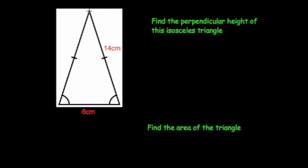We go to the top and cut it in half. By doing so, we now have a right angle here, which means we have a right-angled triangle and can use Pythagoras' theorem. Since the base was 6 centimetres and we've bisected it, it's now 3 centimetres on each side. The length of the diagonal side is 14 centimetres, and the height is what we're trying to find — let's call it x. The side opposite the right angle is the longest side, equal to 14, so that's our C. The two shorter sides are a and b — a is 3 and b is x.